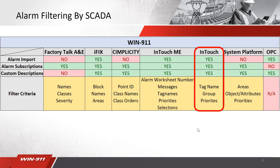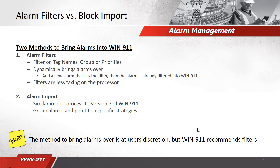If you use subscriptions, you can filter on tag name, group, and priorities. Alarm filters let you filter on those three items and it's a dynamic means of bringing your alarms over. For example, if you have five drive faults and you add a sixth, and you're filtering on the word 'drive' for your tag name, the new item would automatically be included in the subscription with no additional configuration needed. It's a very powerful tool. Filters are also less taxing on the processor and don't take up as much RAM, which is a nice advantage.